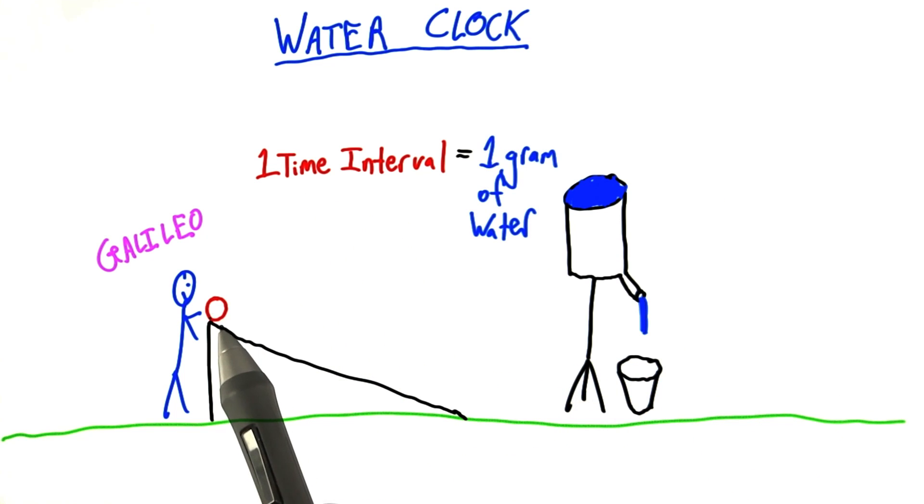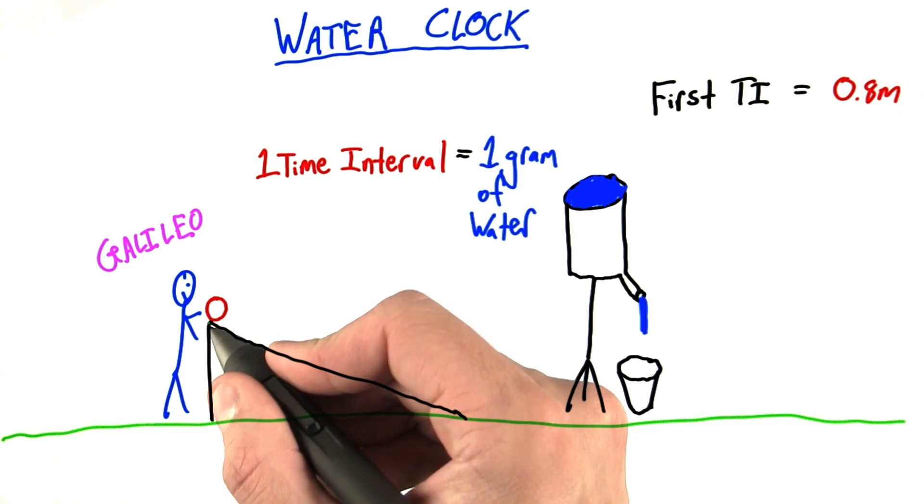And let's say that when Galileo rolls this ball, he finds that in the first time interval in which it's rolling, the ball rolls 0.8 meters. And maybe that means it rolls from here to here.